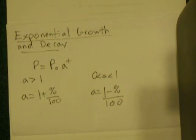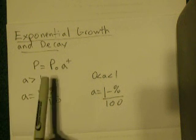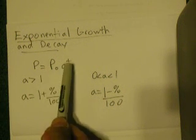I'm going to explain exponential growth and decay. When you have an exponential function, you have P = P₀ × A^T,